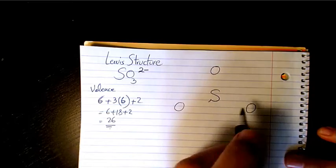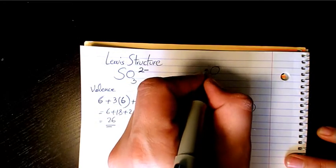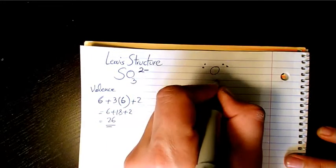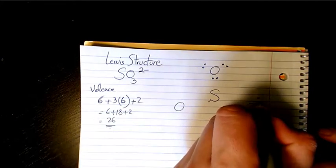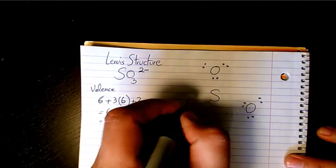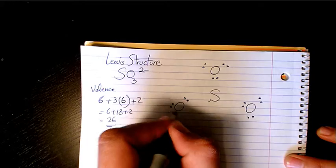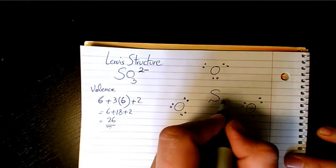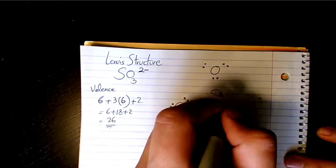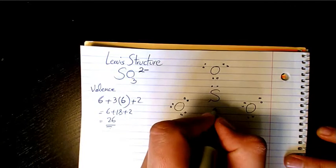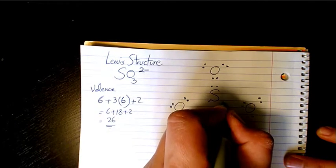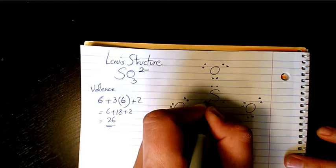So we have oxygen like that. So let's say 2, 4, 6; 2, 4, 6; 2, 4, 6. And for sulfur we have 2, 4, 6.